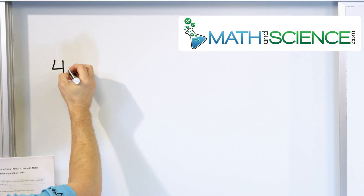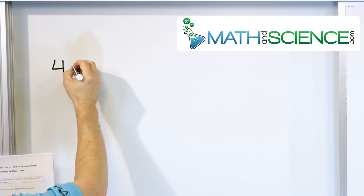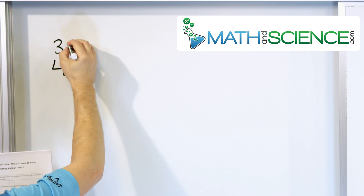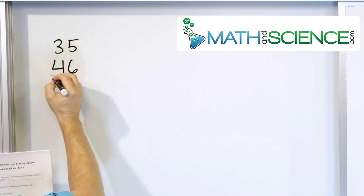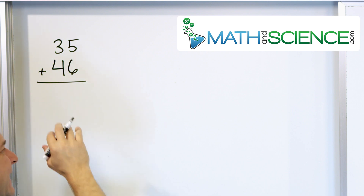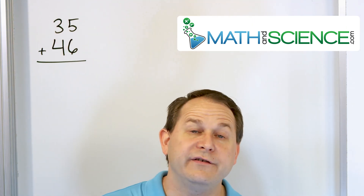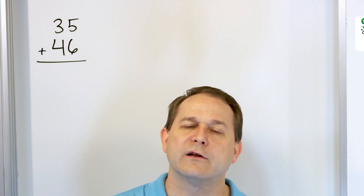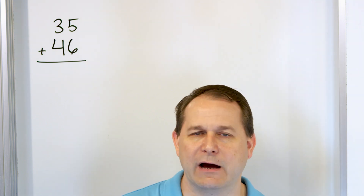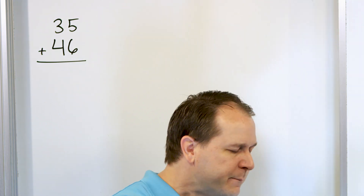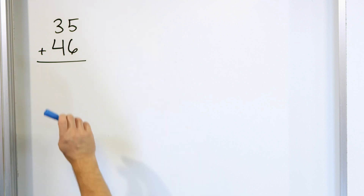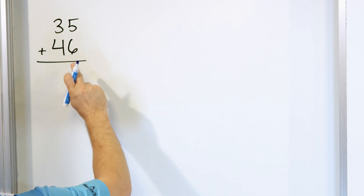Let's say we have the number 46, and we're going to add to that 35. We're going to add these together. Now, we know how to add these. We can get an exact number, but what we want to do in this lesson is learn how to quickly estimate the answer without doing all the calculations. Because it's our first problem, let's go ahead and add it up exactly just to see what the number is.